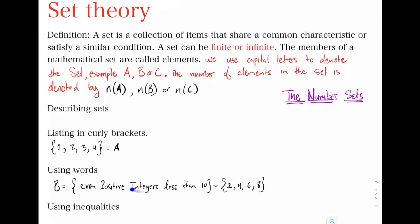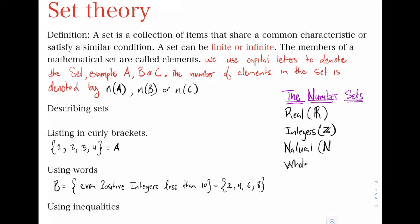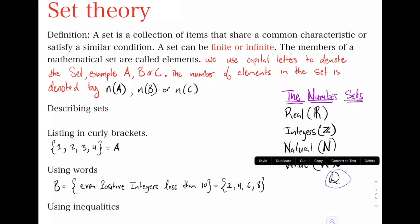To use words correctly, we need to recall our number sets. We have the set of real numbers, denoted by R. We have the set of integers, denoted by Z. We also have the set of natural numbers, denoted by capital N, and whole numbers denoted by W. Finally, we have Q, which is the set of rational numbers.